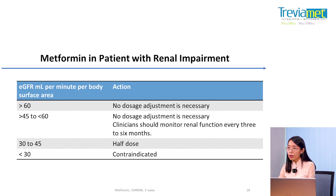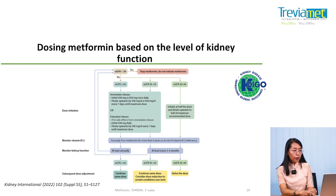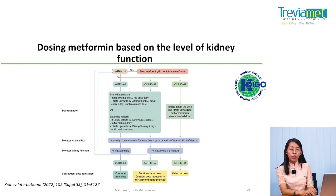Regarding renal dosing, we need to adjust based on eGFR levels. According to KDIGO guidelines, doses are adjusted based on kidney function and monitored every 3 to 6 months. For eGFR 45-59, monitoring every 3 to 6 months is recommended. For eGFR 30-44, the maximum dose is half the standard dose. Below eGFR 30, the drug is discontinued.